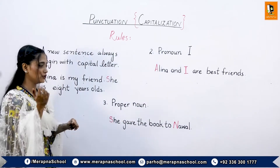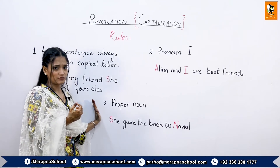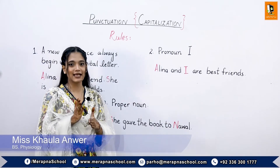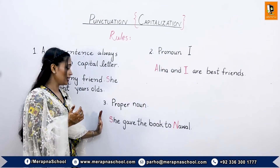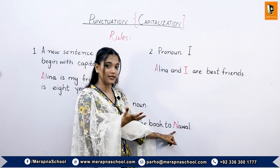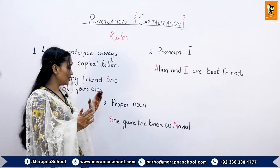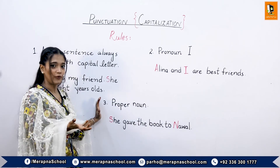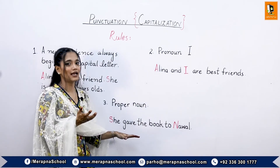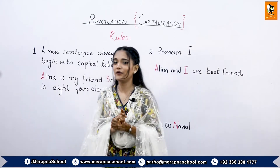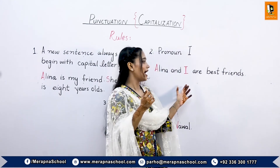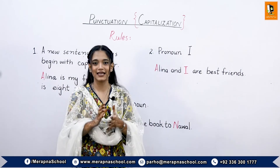The third rule is the proper noun. As we know, a proper noun is the specific name of a person, place, animal, or thing. Because it is a proper name, it is always capitalized. Whether the proper noun comes at the beginning, center, or end of a sentence, it is always capitalized. So to summarize: the first letter of a sentence, the pronoun I, and proper nouns are always capitalized.